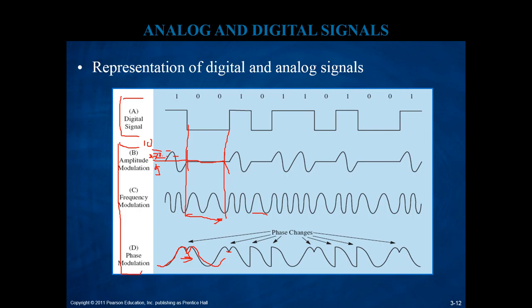Now stop for a second and think about this question: what mode of transmission — digital or analog — is better? Analog signal probably has a number of advantages. The most important advantage of analog signal is that it requires a little bit less coding and decoding in some situations.